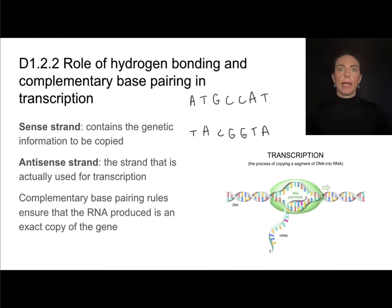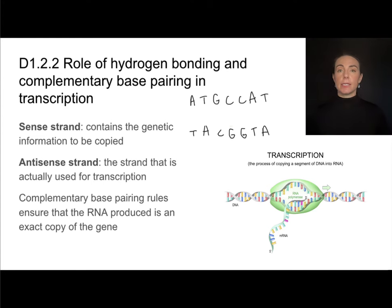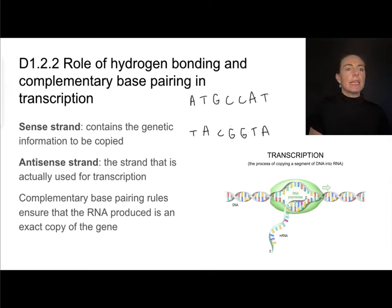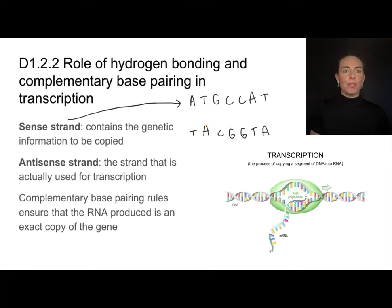RNA is single-stranded, and we're only going to use one of the parent strands of DNA as a template to synthesize that RNA. So how do we know which strand actually gets transcribed? These strands can be renamed: the sense strand contains the genetic material to be copied, while the antisense strand does not include the genetic information to be copied. However, it is the one that is used as a template during transcription.